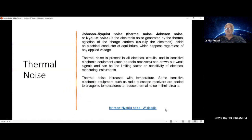Thermal noise is also known as Johnson-Nyquist noise. It's the electronic noise generated by the thermal agitation of the charge carriers, which are usually electrons, inside an electrical conductor at equilibrium. This happens regardless of any applied voltage. Thermal noise is present in all electrical circuits and in sensitive electronic equipment, such as radio receivers. This can drown out weak signals and can be the limiting factor on sensitivity of electrical measuring instruments.